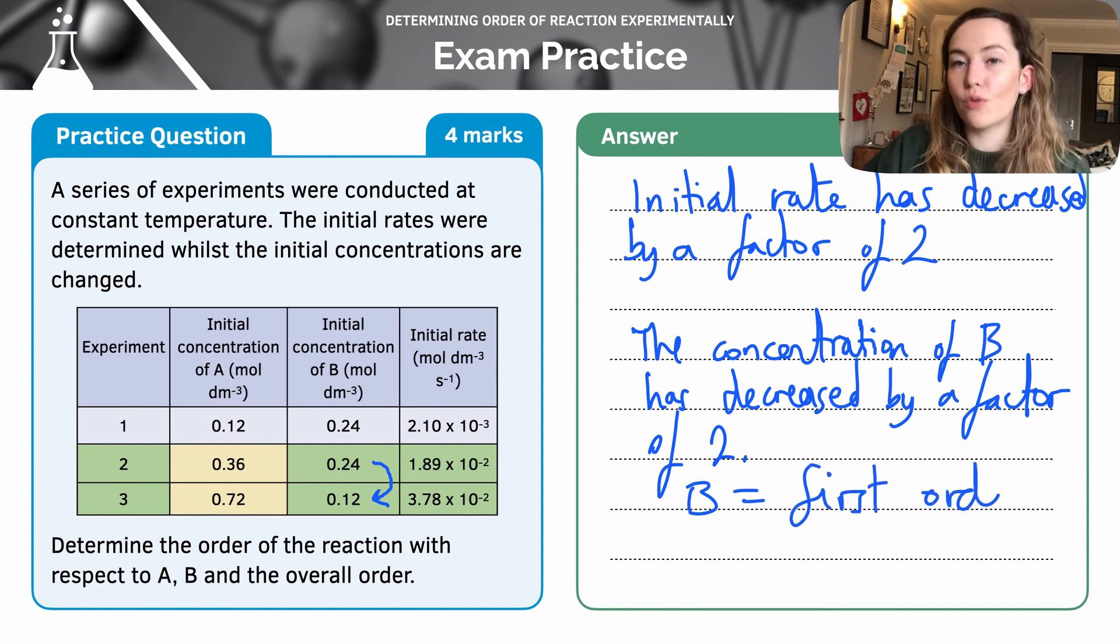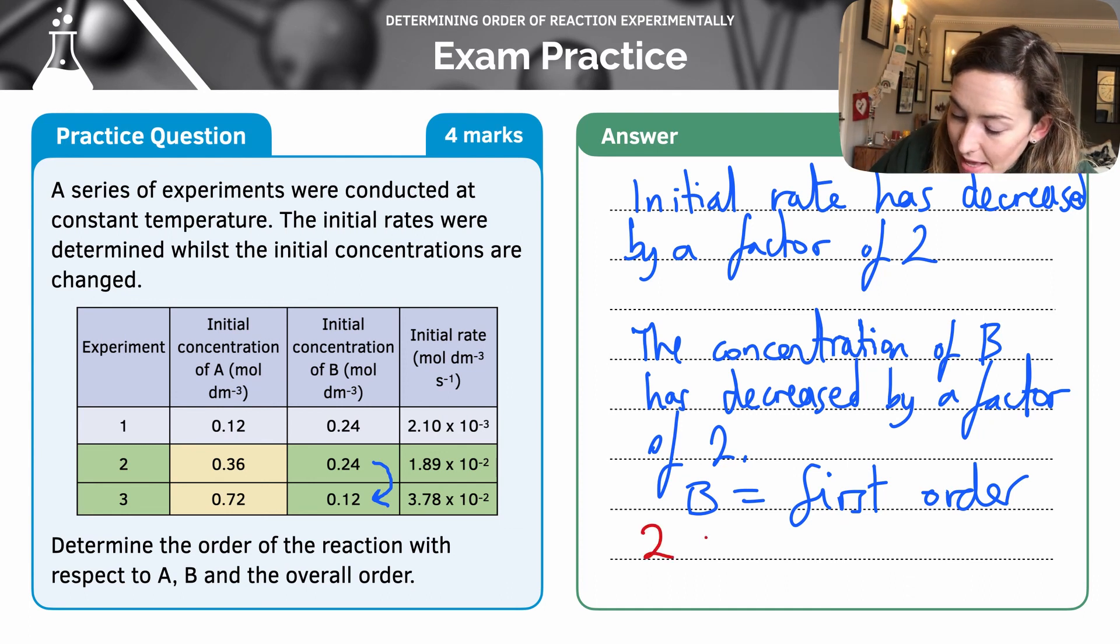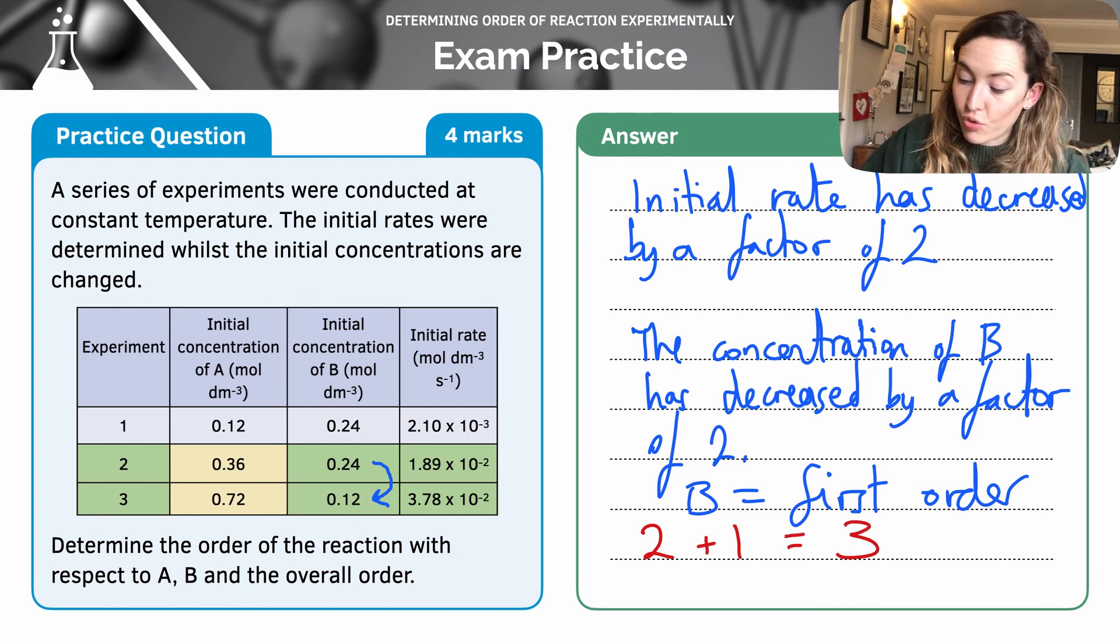So we've worked out the order with respect to A and B. Now we want to work out the overall. We've worked out that A was second order and that B was first order. So the overall order of reaction is three, third order.